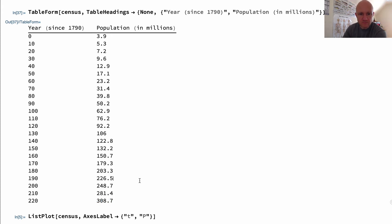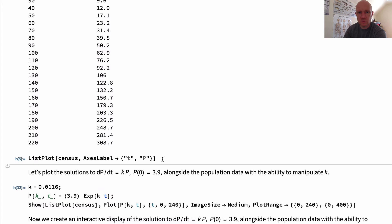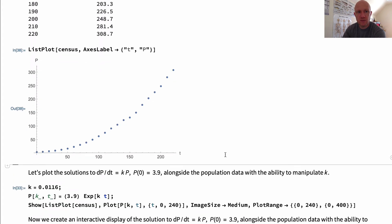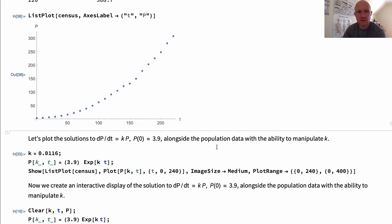The data is the year since 1790, so starting off at zero, that's the year 1790, all the way up to 220, which is the year 2010. And each of those years we're given a population in millions. So the first thing we should do is plot it. If we just plot it by itself, it looks pretty much like an exponential growth curve. It looks pretty convincing that it's exponential growth, and maybe our model will do a good job.